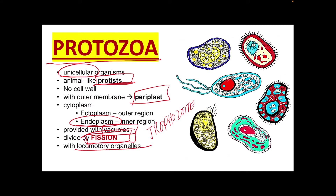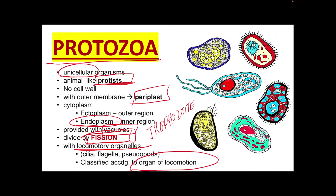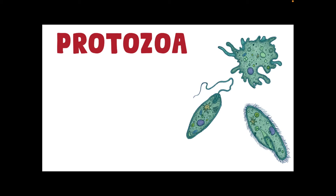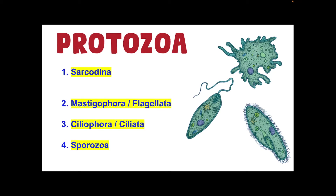Protozoa are also provided with locomotory organelles, including cilia, flagella, and pseudopods. This is very important because these locomotory organelles classify the protozoans — they are classified according to their organ of locomotion. The most important feature separating amoeba from other unicellular protozoa is the means by which they move. Protozoans are classified as Sarcodina, Mastigophora or Flagellata, Ciliophora or Ciliata, and Sporozoa.